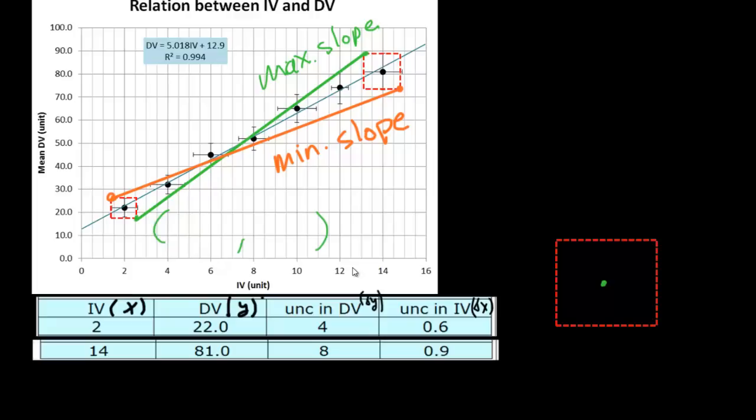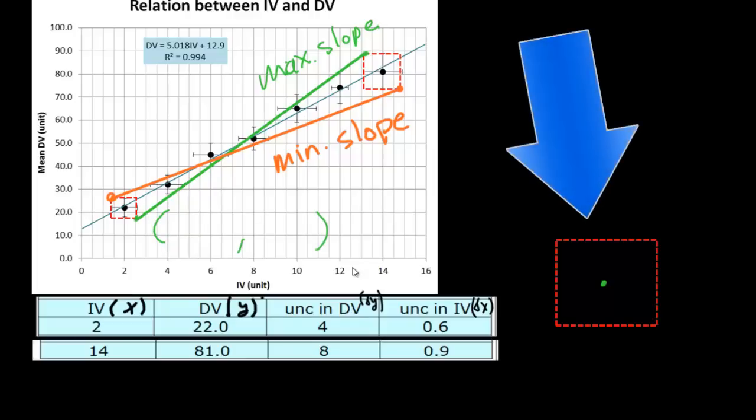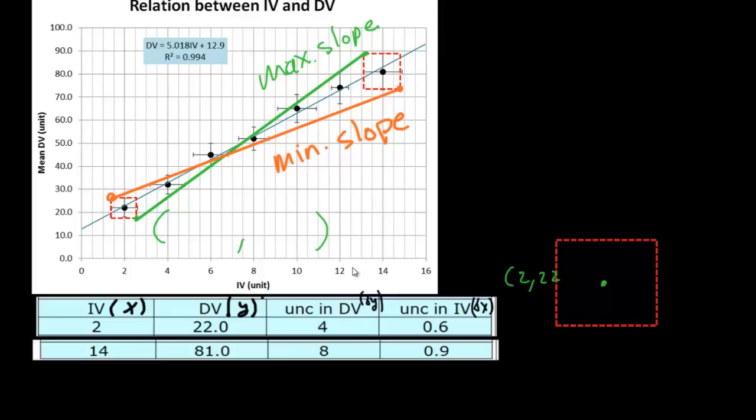2, 22, that's the measured value. That's in the center of the box, 2, 22. So our center of the box is at 2, 22. We've got an uncertainty in the y variable here of 4. So this distance here is 4. Our uncertainty in the x variable is 0.6. And what we're looking for is that point in the bottom corner.